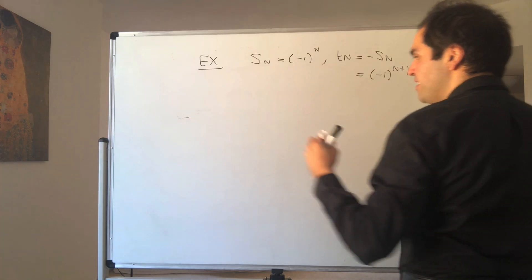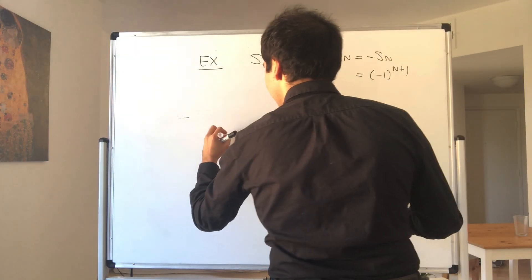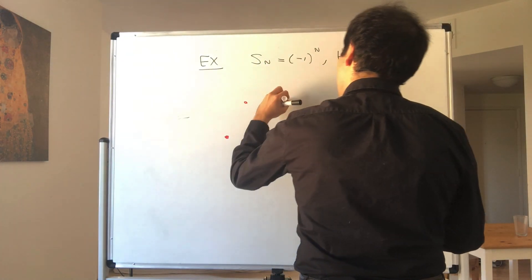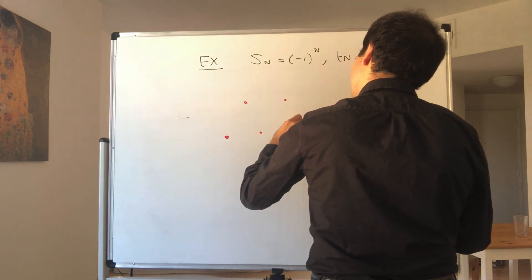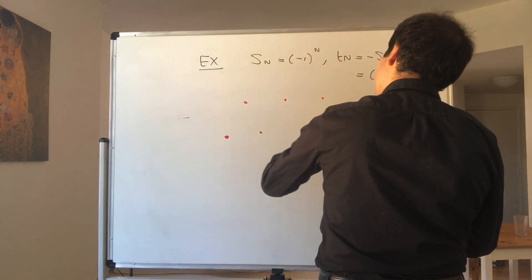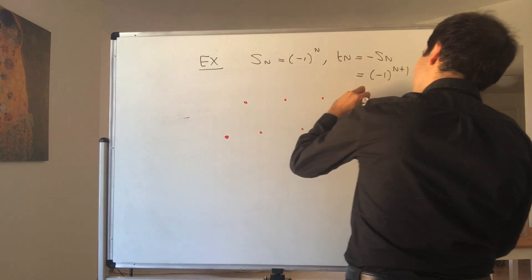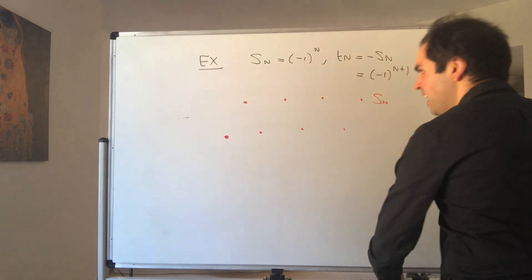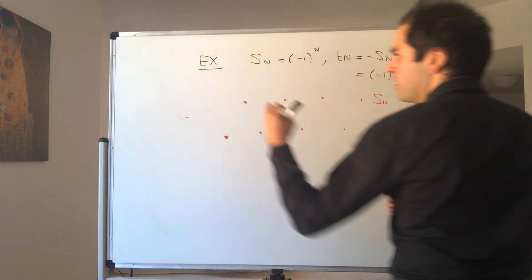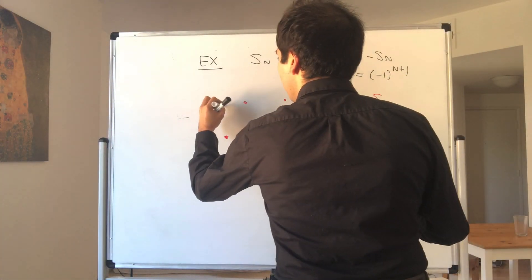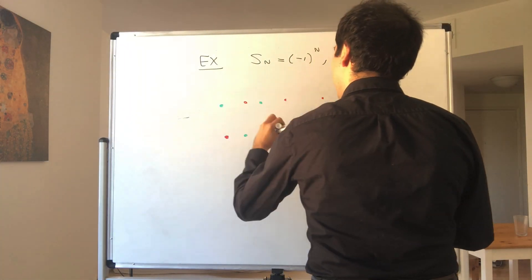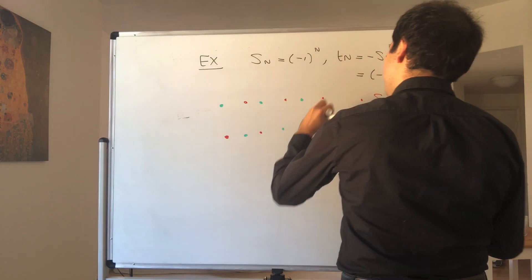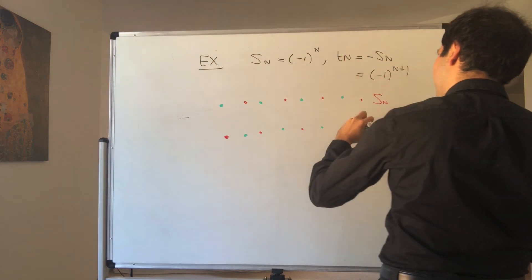The way Sn looks: it goes minus 1, 1, minus 1, 1, minus 1, 1, minus 1, 1. That's Sn. And Tn is the opposite: 1, minus 1, 1, minus 1, 1, minus 1, 1, minus 1.